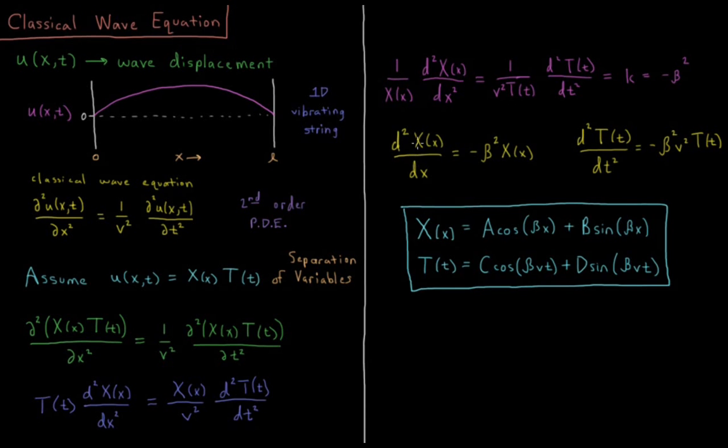So that's something they would teach in an ordinary differential equations course, is how to solve this particular equation here. So the solution ends up being a constant times cosine of beta x, plus another constant times sine of beta x, for the x part. And for the time part, we have a constant times the cosine of beta v times t, plus another constant times the sine of beta times velocity times t.